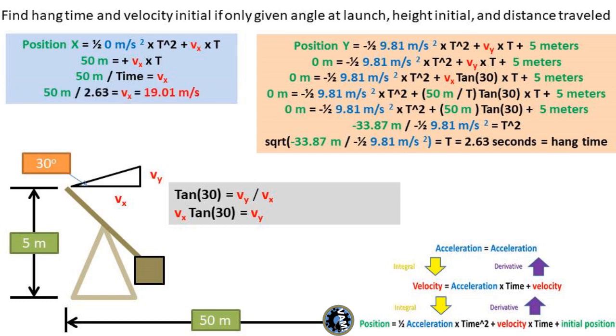The hang time is the same for both the x and y direction, so we can plug in the hang time into the x formulas to get the velocity in the x direction at launch. We get a velocity in the x direction of 19.01 meters per second.